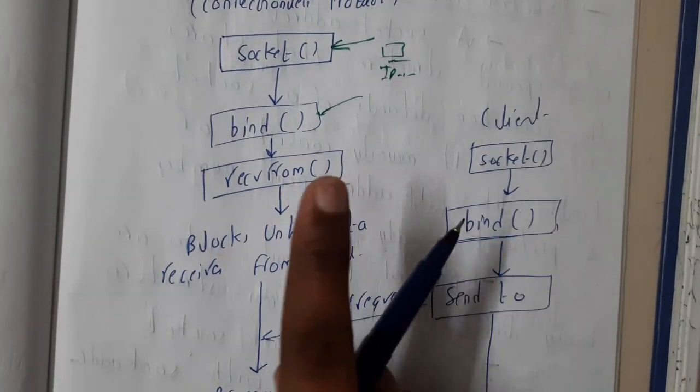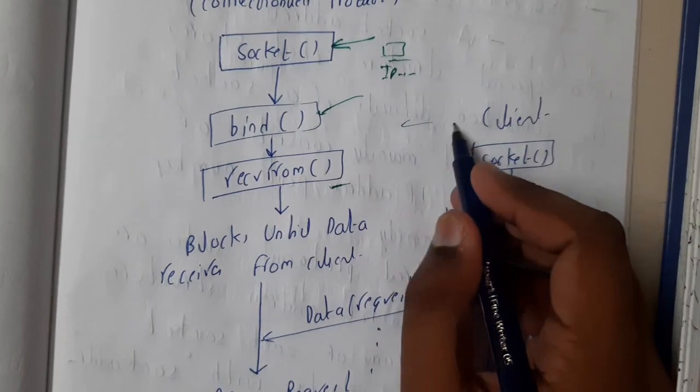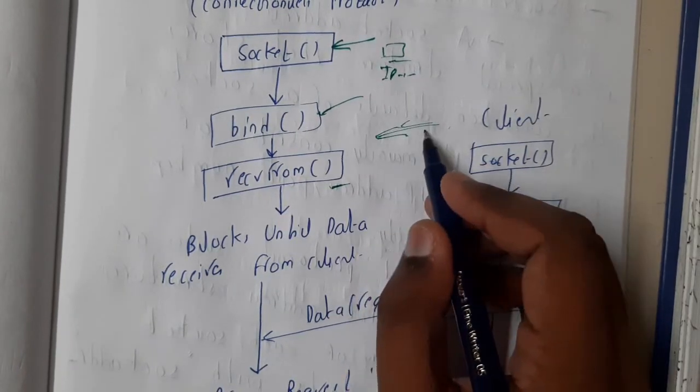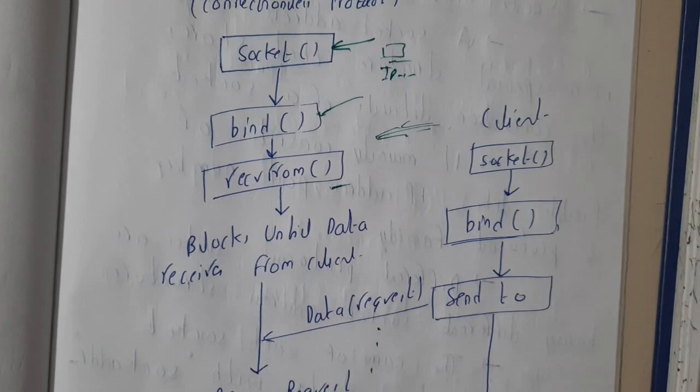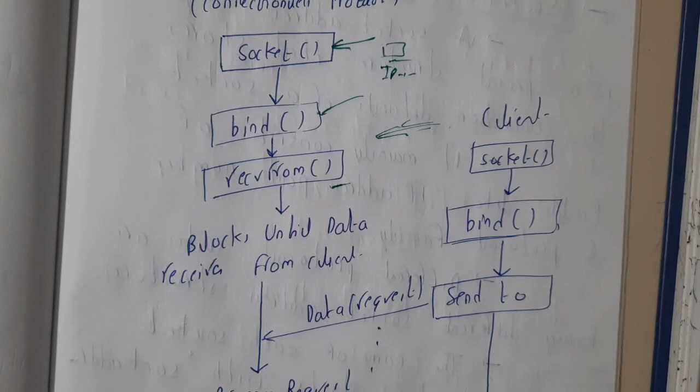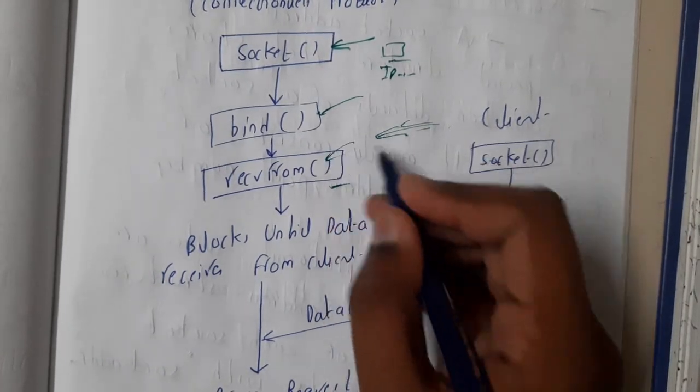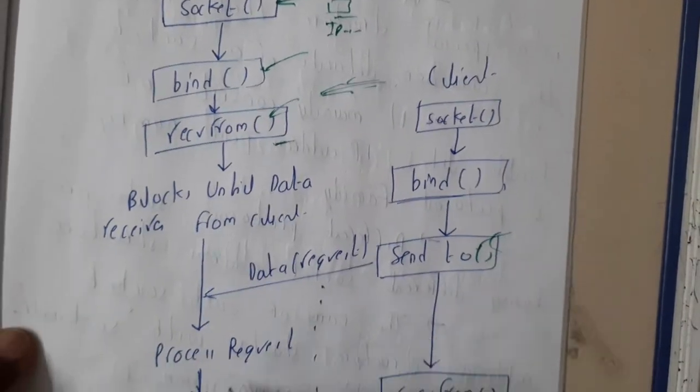This is in connectionless. The only thing that you should remember is in connection-oriented, the connection is established, whereas in connectionless, the connection is not established and the data is directly sent blindly. And one more thing is that here you will be mentioning the addresses where it is sending inside the parenthesis.